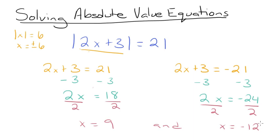We can check our solutions by plugging them back into our original equation. If you plug in 9 for x and get 21, then x equals 9 is correct. And if you plug in negative 12 for x and get 21, then x equals negative 12 is also correct. That's just a way to double check — these answers are correct if you plug them in that way. Let's try another one.